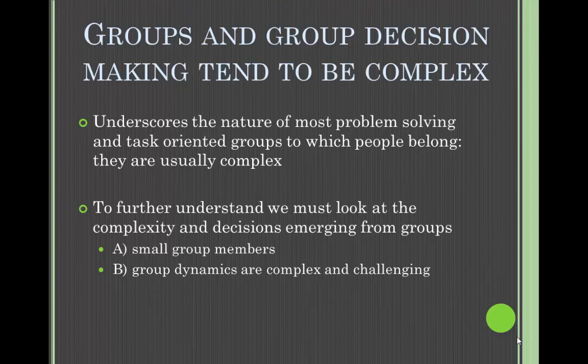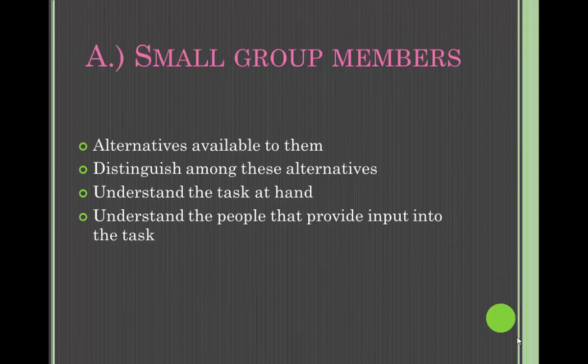The third assumption is that groups and group decision-making tend to be complex. This underscores the nature of most problem-solving and task-oriented groups to which people belong — they are usually complex. To further understand, we must look at the complexity and decisions emerging from these groups. There are two components: the small group members, and the group dynamics that are complex and challenging.